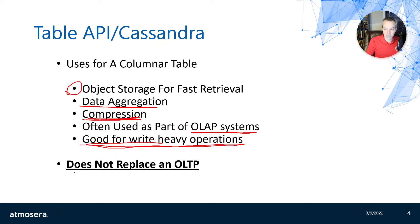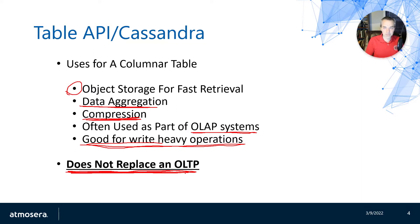One thing Cassandra doesn't do is replace an OLTP system. Many people see tables and jump to thinking of SQL Server or a relational database management system — but Cassandra is not a replacement for that. There are no relationships enforced by table APIs or Cassandra, no foreign key relationships. The recommendation is to use table storage for denormalized data, append-only operations, object storage, and aggregation — but don't try to replace an RDBMS where you need foreign key constraints, complex joins, and relational queries. It's simply not intended for that.